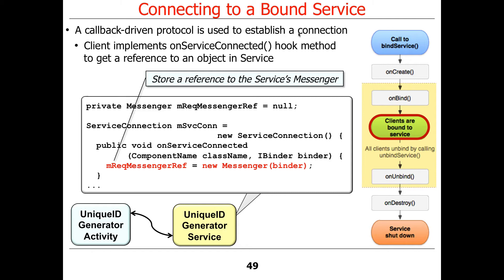Question: what stops you from calling bindService on a started service? Nothing stops you — in fact, there are hybrid services that are both started and bound. The Android music service is one example. The main reason it normally doesn't work is that a purely started service implements onBind to return null. So if you call bindService on a service that returns null, you'll get back nothing useful and won't establish a connection. Nothing stops you, but it won't give the right result — nothing stops you from driving your car at 100 miles an hour into a wall, but it's not a good idea.